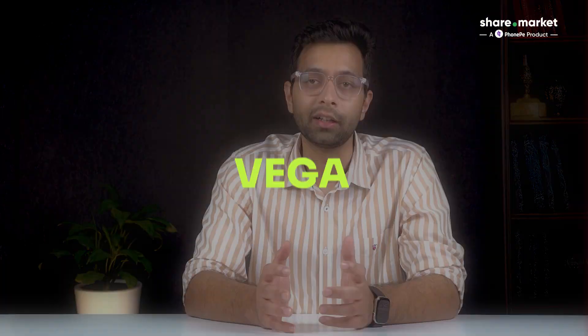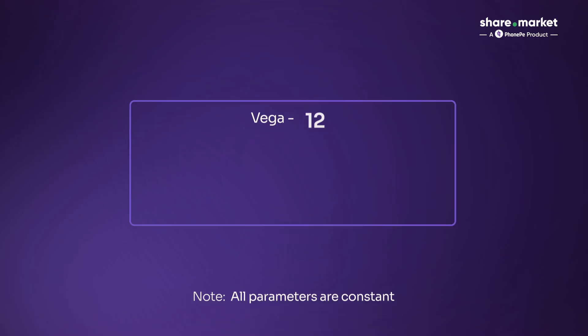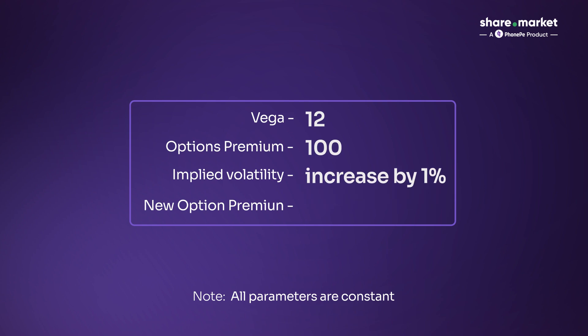Let's move on to the fourth Greek: Vega. Vega measures how sensitive the option premium is to changes in volatility. For example, if Vega is 12, then a 1% rise in implied volatility increases the option premium by 12 points per lot. This becomes very important around big events like earnings, elections, or central bank announcements. During these times, uncertainty increases, implied volatility rises, and premiums for both calls and puts start climbing.